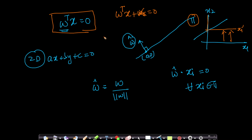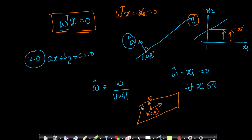The geometric interpretation of w is that it is a vector perpendicular to your plane. In 3D, if this is your plane with origin, w is a vector perpendicular to all the points on this plane. The same math works whether you go into 2D, 3D, 4D, or ND. That is the beauty of linear algebra.